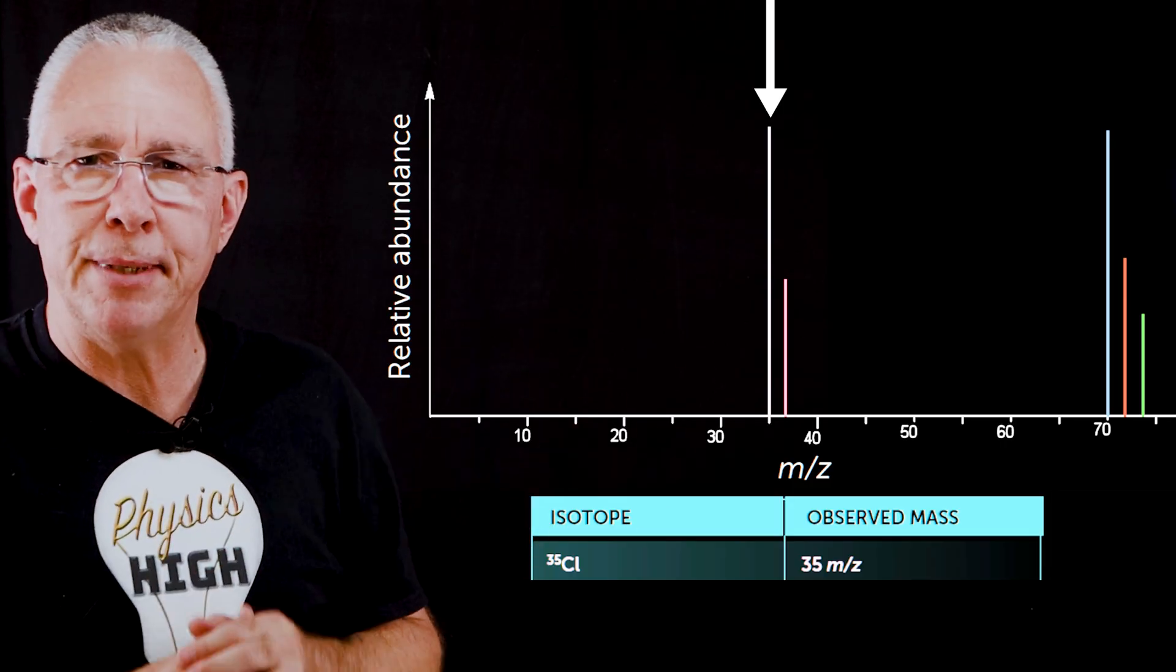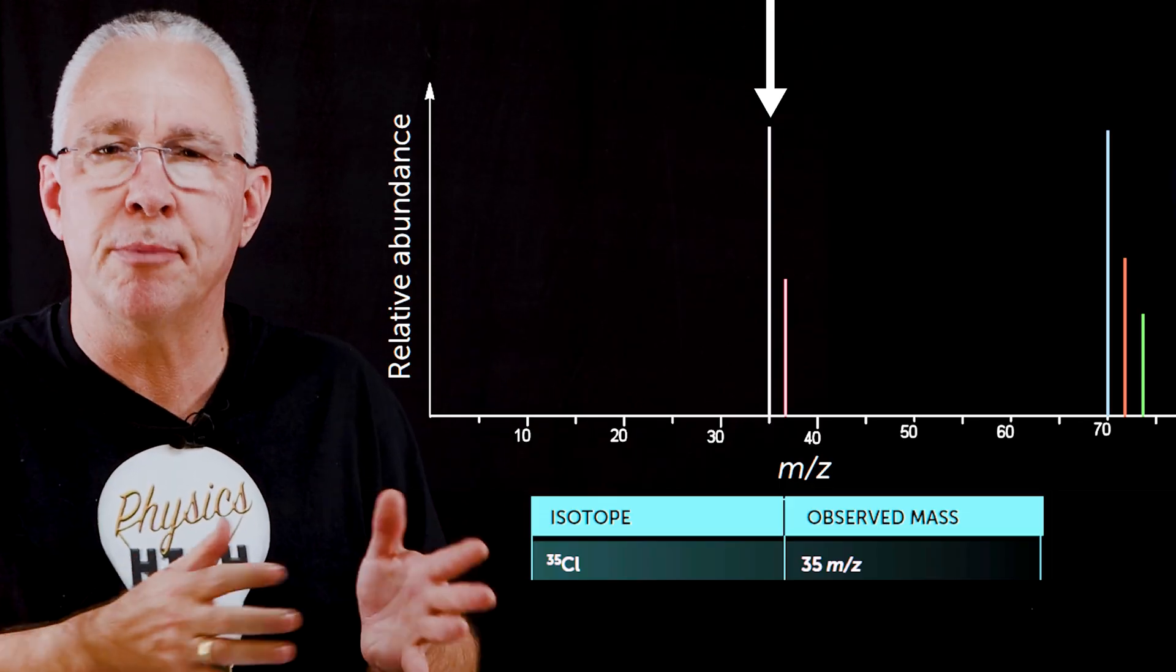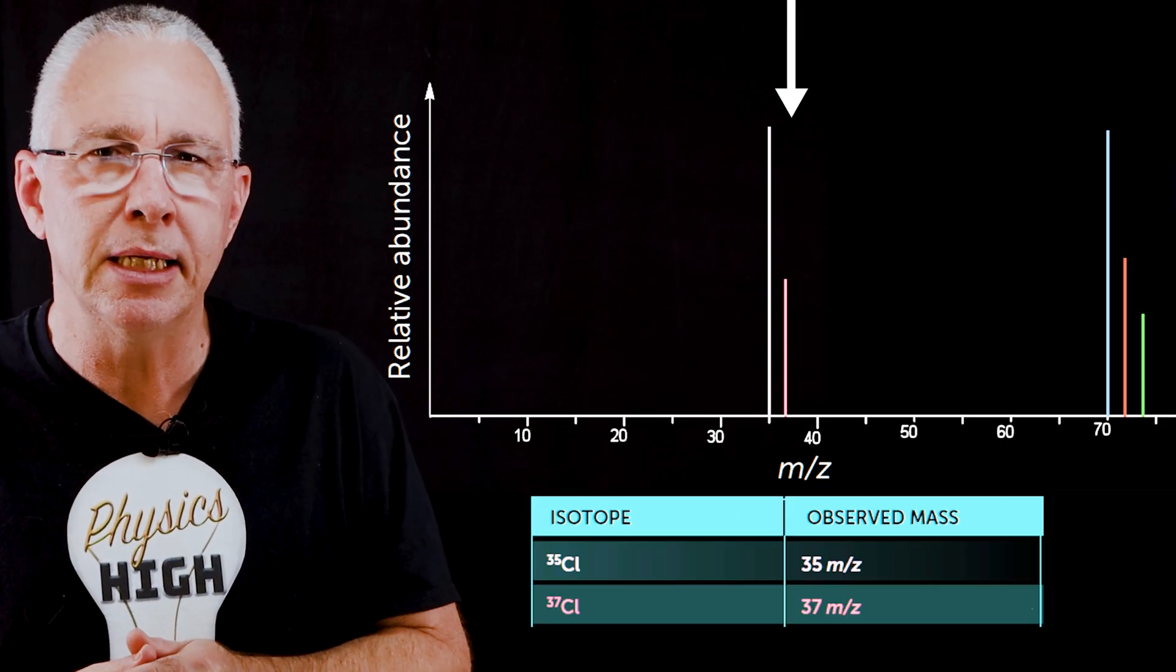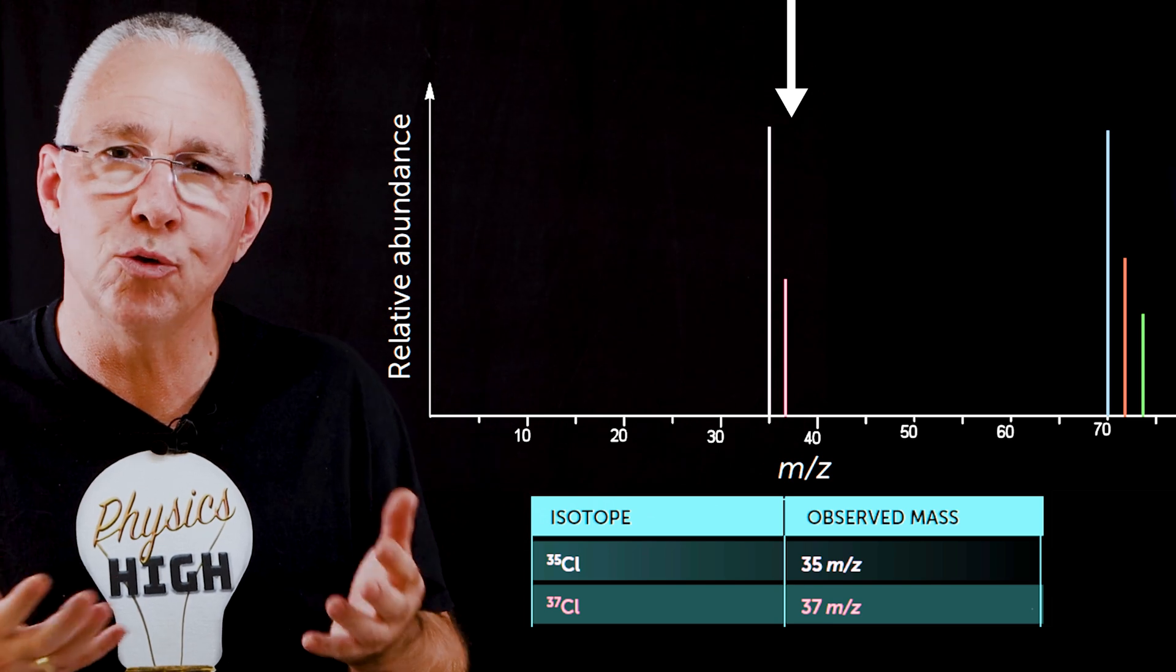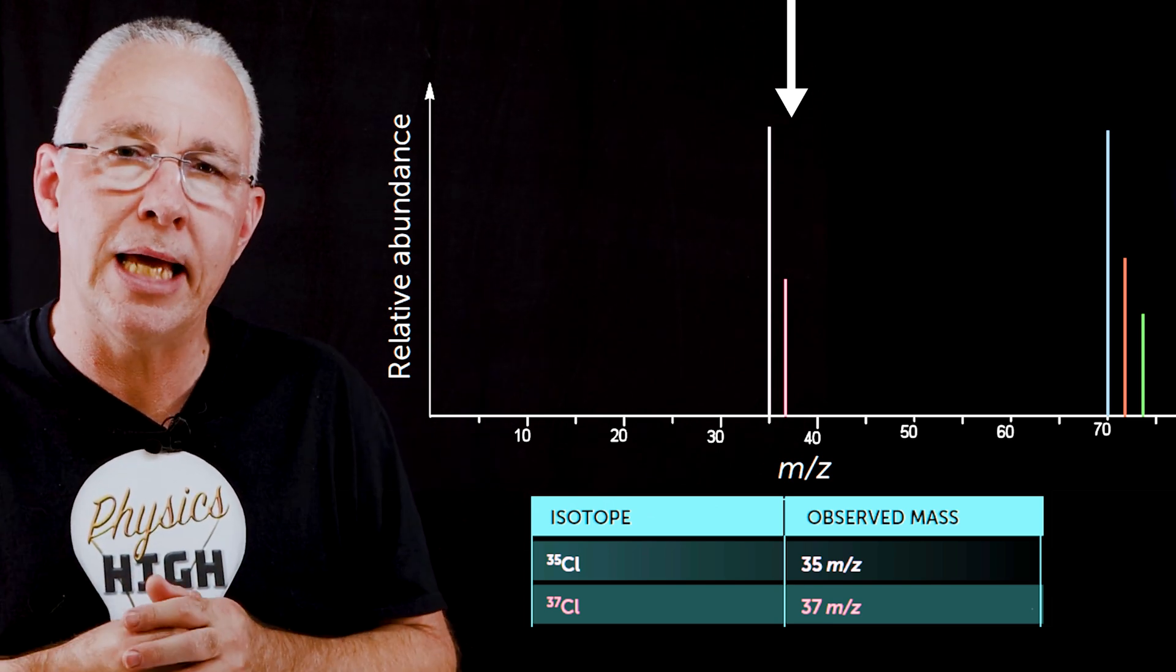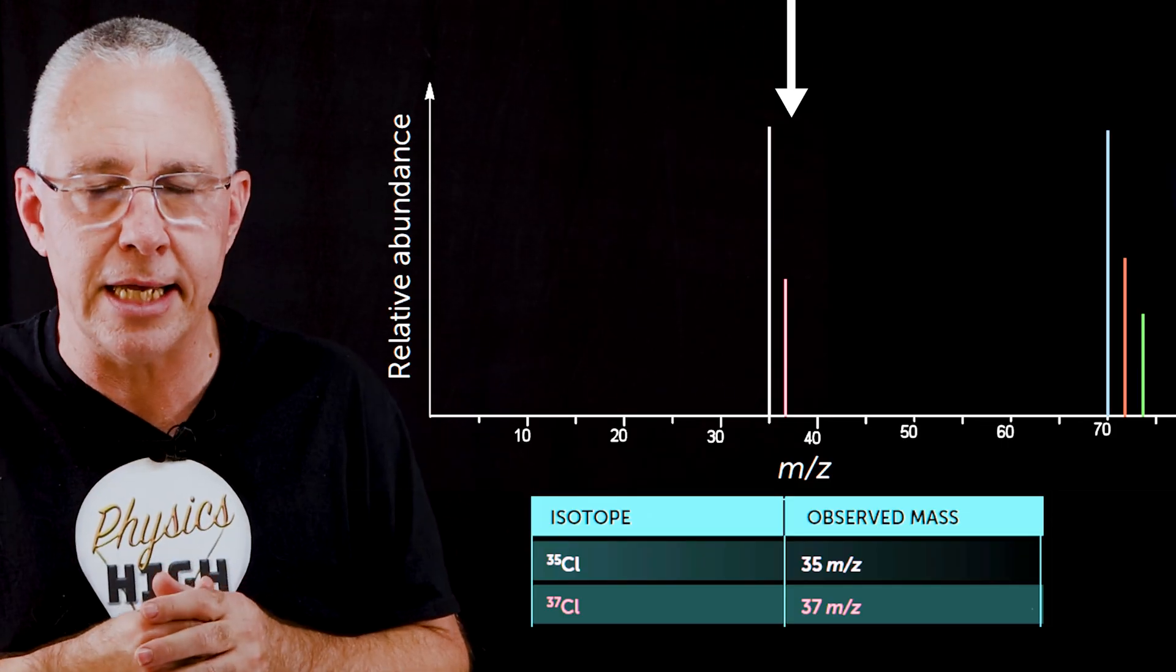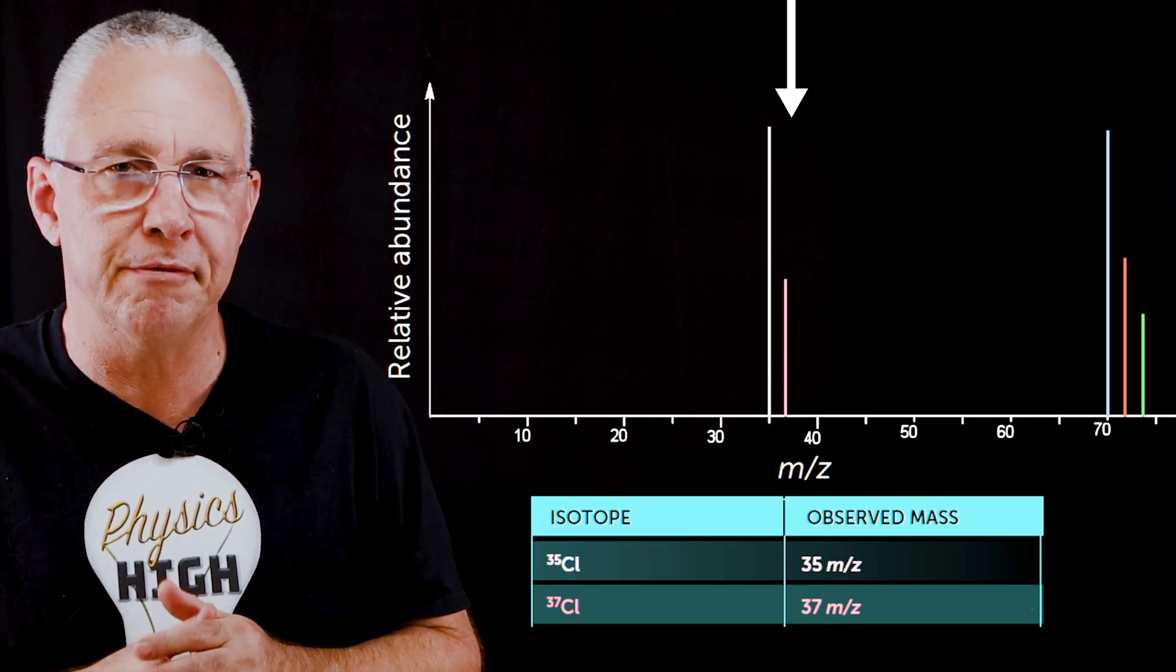But we have other peaks. Well, the first thing to remember is that we have the isotope of chlorine to account for as well. So you'll find that we have also the isotope of chlorine 37. And therefore, it has the same charge, but it has two extra neutrons. And so therefore, you're going to get a slightly heavier chlorine atom striking the plate. And so as a result, you'll see some of those. Now, you can see in our case, we have a lower abundance, relatively speaking, to the chlorine 35s.